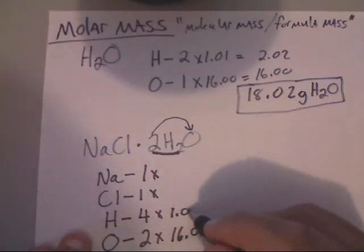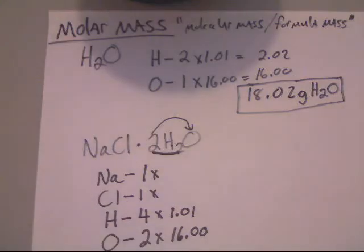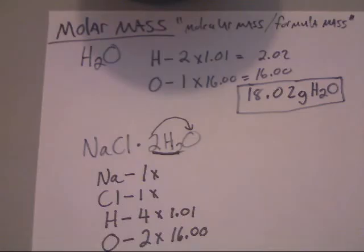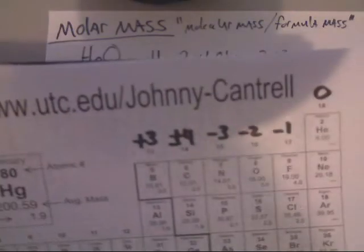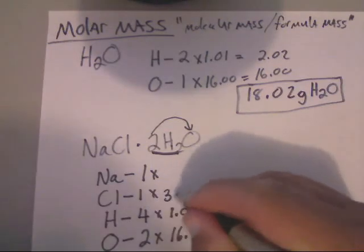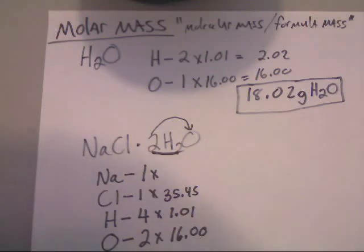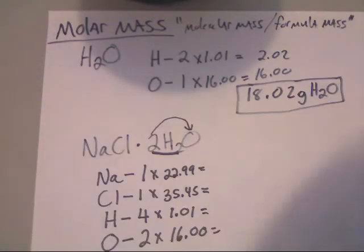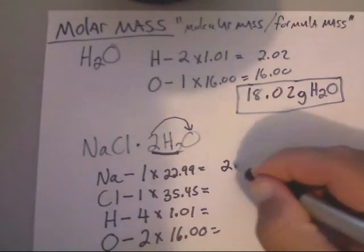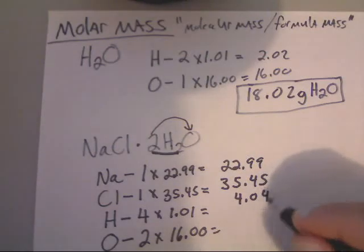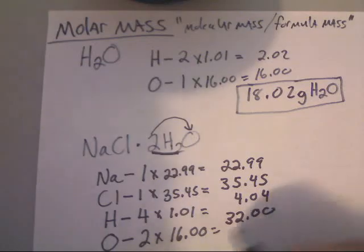Oxygen is 16.00, hydrogen is 1.01. For chlorine, I'll have to look on the periodic table — I do not remember it right off the top of my head. On my periodic table, you'll see that chlorine is 35.45, and sodium is 22.99. That gives us 22.99 for sodium, 35.45 for chlorine, 4.04 for hydrogen, and 32.00 for oxygen.